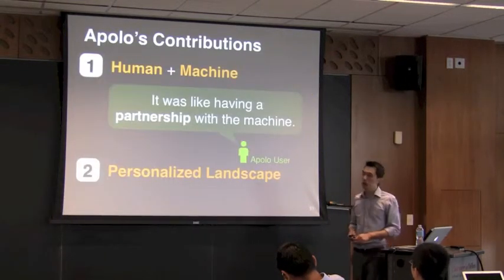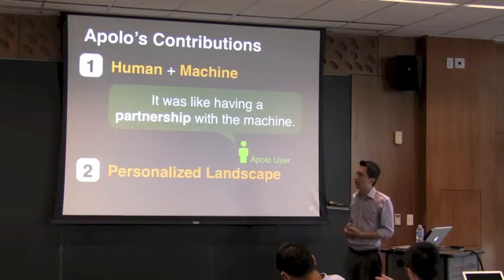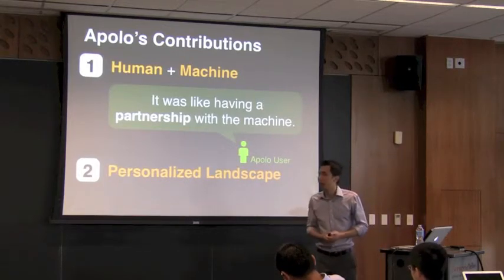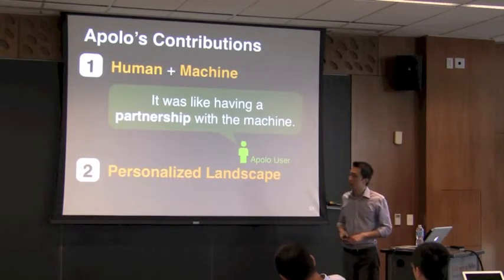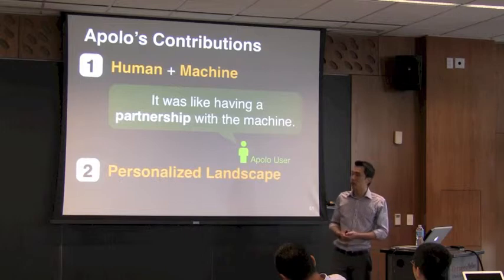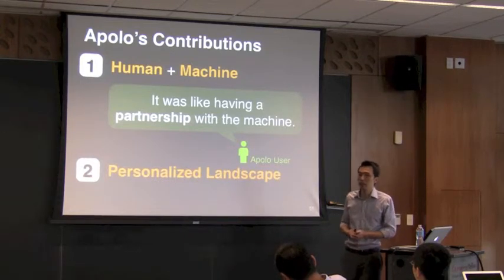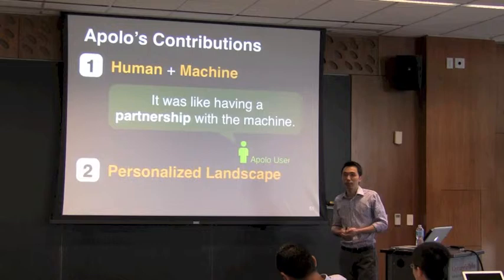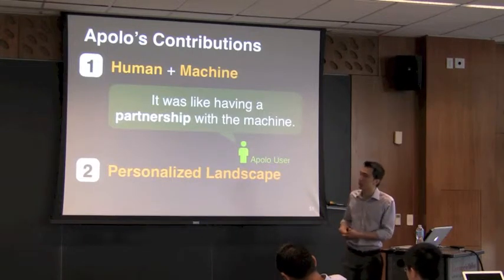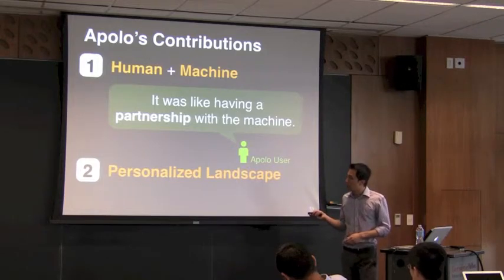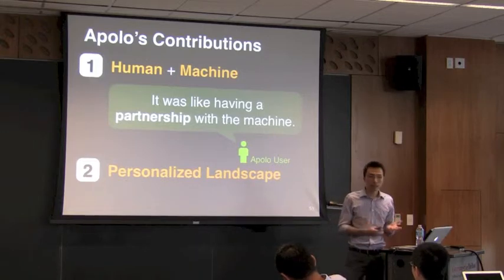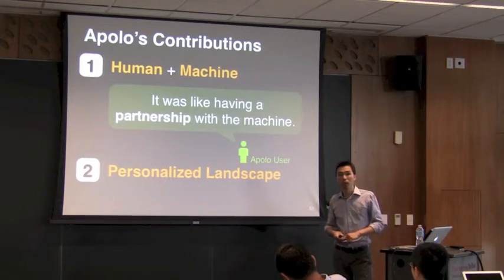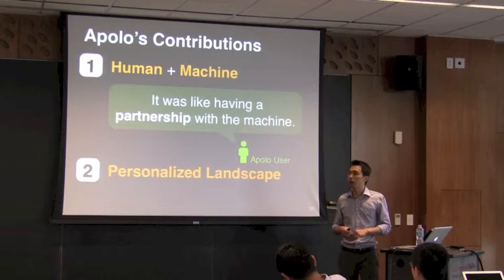The main contribution of Apollo is that you can create an experience that combines human and machine together. Some users of Apollo commented that it's a very natural way of interacting with information — as if how they would do it normally, like having a partnership with the machine. Apollo is also able to create a very personalized landscape for each user, based on each person's individual experience or knowledge about the data.